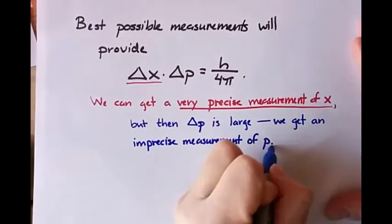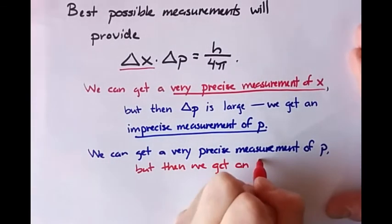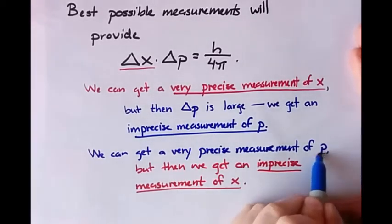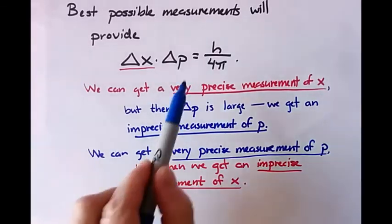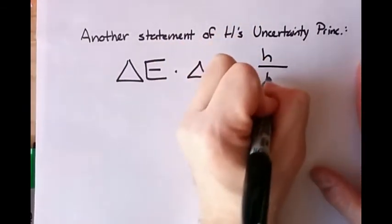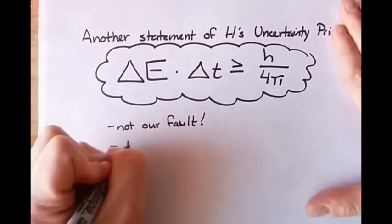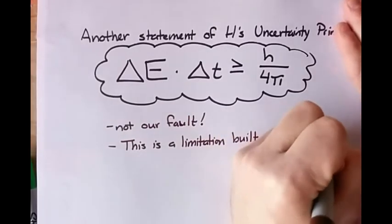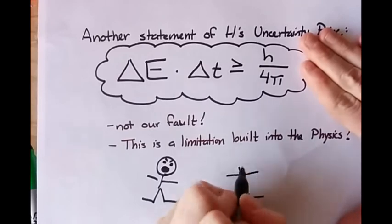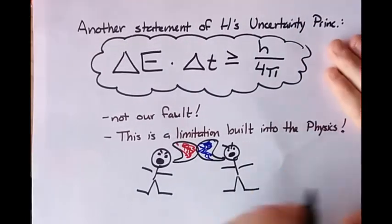If the uncertainty in the momentum is very small, then the uncertainty in the position measurement will be quite large. That trade-off is built into the physics — it is a result of quantum mechanics. The Heisenberg Uncertainty Principle can also be stated as a relationship between uncertainty in energy and uncertainty in time: the uncertainty in energy multiplied by the uncertainty in time must also be greater than h over 4 pi. This is not because you happen to be bad at measuring energy and time — it is built into the physics. It's a very strange fact that has been debated since it was found, but it has been shown to be true in experiment after experiment.